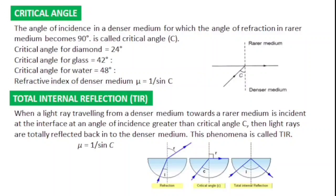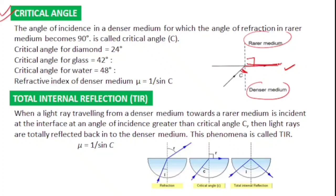The next important topic is total internal reflection. Before this, we must know about critical angle. Suppose light travels from a denser medium to a rare medium — it bends away from the normal. At one particular angle of incidence, the angle of refraction becomes 90°, meaning the refracted ray is parallel to the surface. This angle of incidence is called the critical angle. The formula is μ = 1/sin C, where C is the critical angle. Critical angle for diamond is 24°, for glass 42°, and for water 48°.